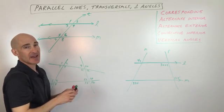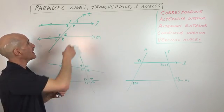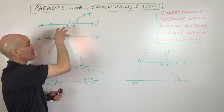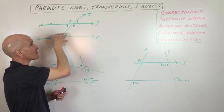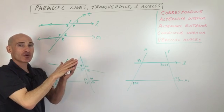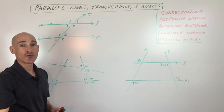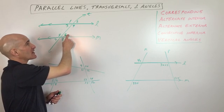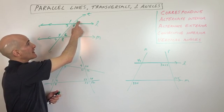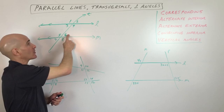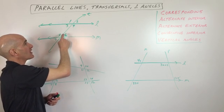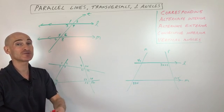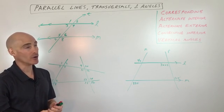Corresponding angles: if you were to take this X, see how it forms an X there, and pick it up and place it on the X down here, the angles that match up or correspond are going to be congruent — they're equal to each other. So angle two corresponds with angle six. Think of it as upper right matches upper right, upper left matches upper left, lower left matches lower left, lower right matches lower right. Those are corresponding angles, and they're congruent.